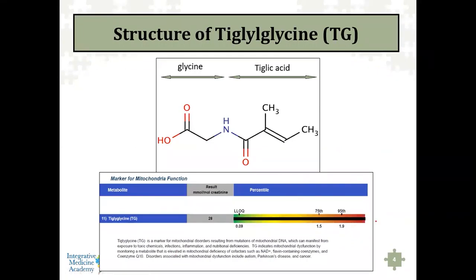Here's the marker — it's the last marker on the GPL TOX profile. It doesn't show up elevated that often. In all the GPL TOX tests I've analyzed, probably between 5 to 10% of the time it's elevated. It is linked to mitochondrial problems that could be mutations in the mitochondrial DNA, or it might manifest from toxic chemical exposure, oxidative stress, nutritional deficiencies, or inflammation. At a minimum, we can support patients with good nutritional supplementation — CoQ10, biotin, antioxidants — to support nutrients at the cellular level.